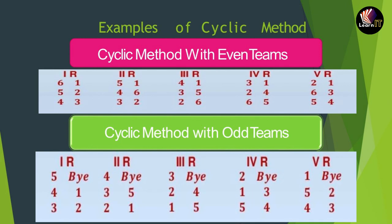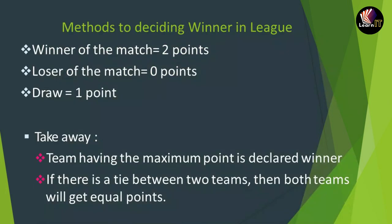In the cyclic method with odd teams, the only change is that in place of Team 1, a bye is written. The total number of matches remains 15. If there are 5 teams, a single bye is placed at the starting point: Team 5 has a match with the bye, Team 4 plays Team 1, Team 3 plays Team 2, and so on — teams shift their places with the bye across rounds.